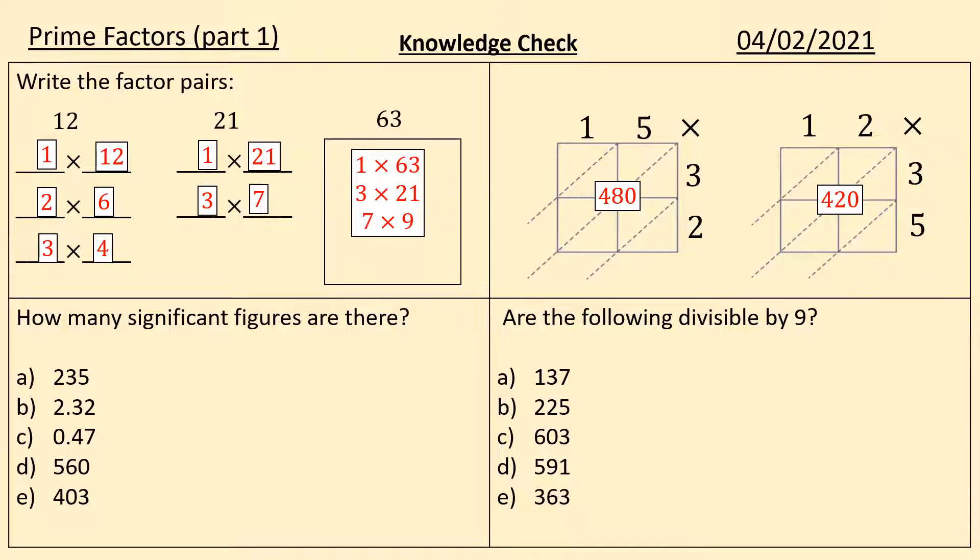How many significant figures are there? Answers going up now. Just going to talk through the last three. So in C, the zero is before the first significant figure, so it's not significant. In D, the zero is after the last significant figure, so it's not significant. E, it is between the first and last significant figures, therefore it is also significant.